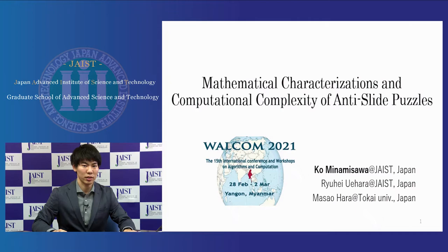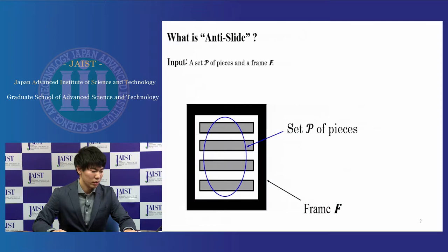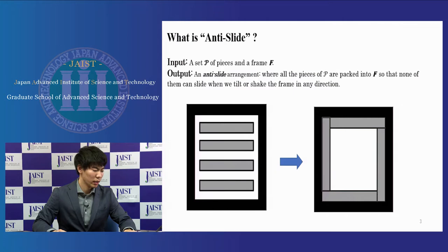This is an example of anti-slide. An anti-slide puzzle is given a set P of pieces in a frame F. A black eye is a frame. Four grey rectangles are pieces. The goal of this puzzle is to find an arrangement where all pieces of P are packed into F, so that none of them can slide when we tilt or shake the frame in any direction.